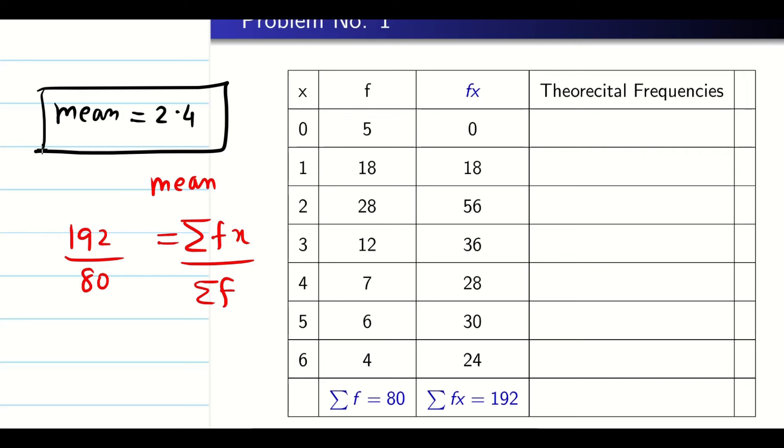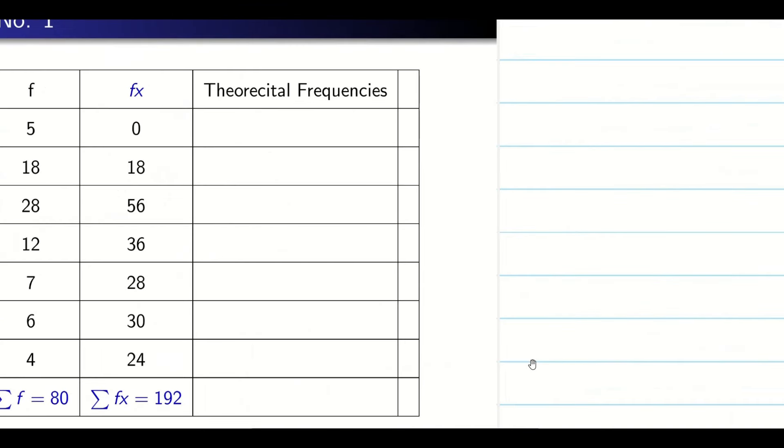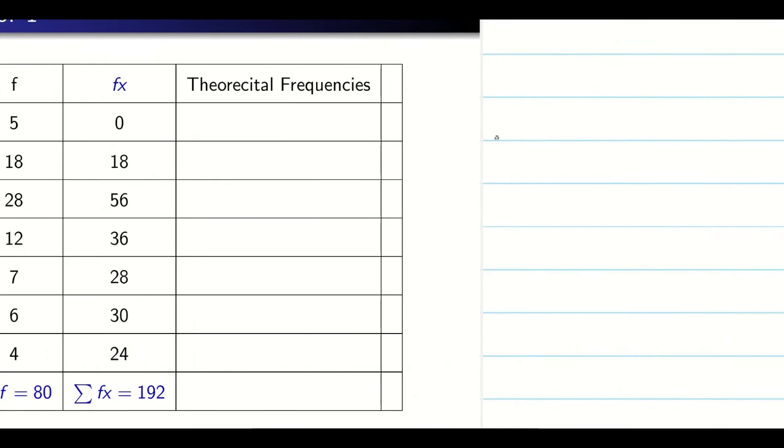Now what I have to do? We know the binomial formula. What is my binomial formula? My mean is going to be NP. So my NP is equal to 2.4. I know what? N. What is my N? My N is 6. So 6 into P is equal to 2.4 guys.